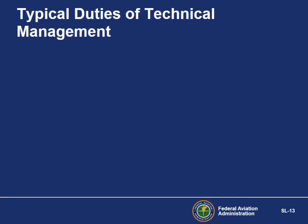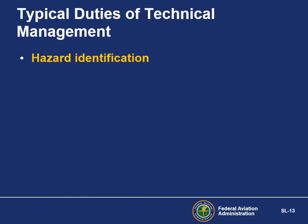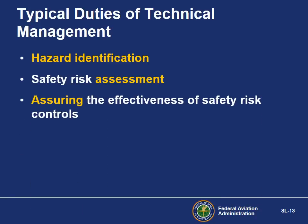What about the technical managers — the experts who manage the flight line, training, or hangar floor? What part do they play in SMS? They are some of the primary hazard identifiers. They are the primary risk assessors and decision-makers. Is the risk acceptable? They monitor controls to ensure their effectiveness. These managers are also responsible for safety promotion, communication, training, obtaining safety objectives, and many other critical roles.